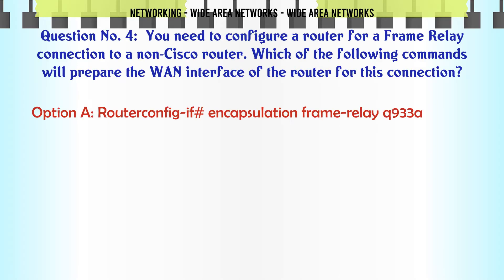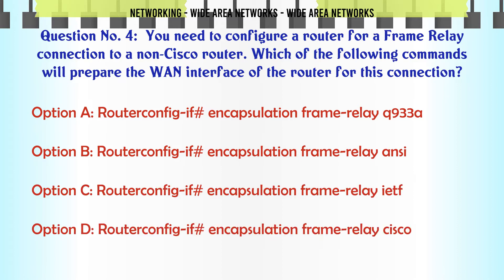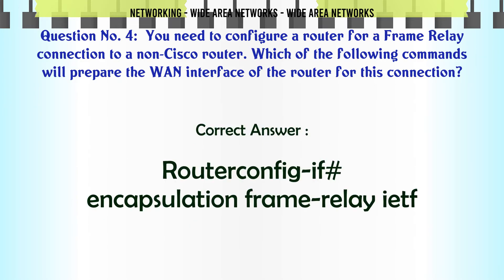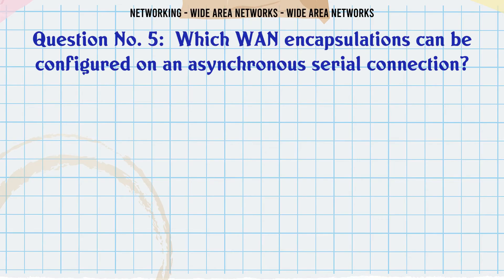You need to configure a router for a frame relay connection to a non-Cisco router. Which of the following commands will prepare the WAN interface of the router for this connection? A. Router(config-if)# encapsulation frame-relay Q933A. B. Router(config-if)# encapsulation frame-relay ANSI. C. Router(config-if)# encapsulation frame-relay IETF. D. Router(config-if)# encapsulation frame-relay Cisco. The correct answer is C: encapsulation frame-relay IETF.